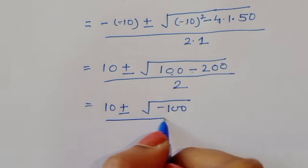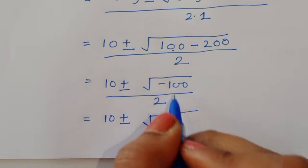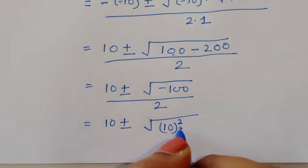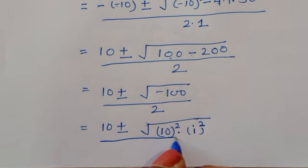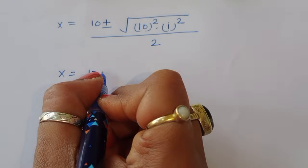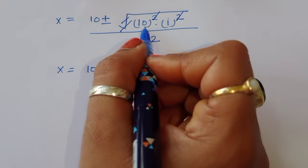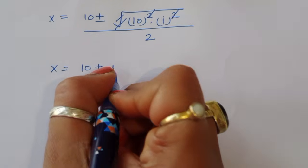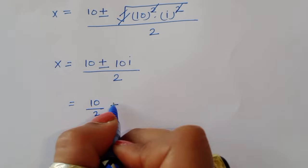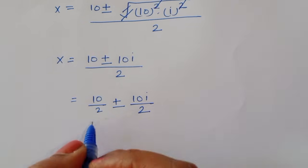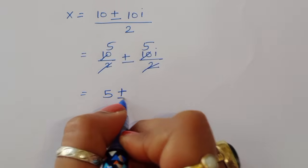We can write minus 100 as 100 times minus 1. Since minus 1 equals i squared, the square root of minus 100 becomes the square root of 10 squared times i squared, which simplifies to 10i. So we have 10 plus or minus 10i divided by 2, which gives 5 plus or minus 5i.